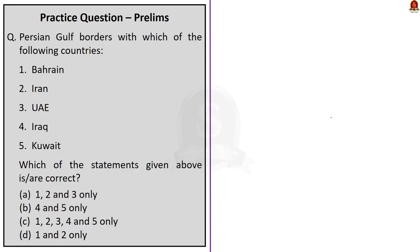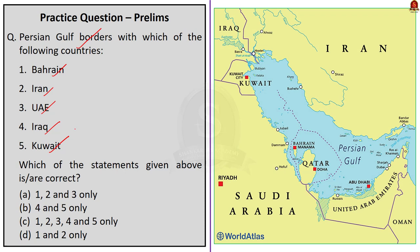First question: The Persian Gulf borders with which of the following countries? (1) Bahrain, (2) Iran, (3) United Arab Emirates, (4) Iraq, (5) Kuwait. Which of the statements given above is correct? From the map, the countries surrounding the Persian Gulf are Bahrain, Iran, Iraq, Kuwait, Qatar, Saudi Arabia, and the United Arab Emirates. Therefore, all five options given are correct. The correct answer is option C: 1, 2, 3, 4, and 5.